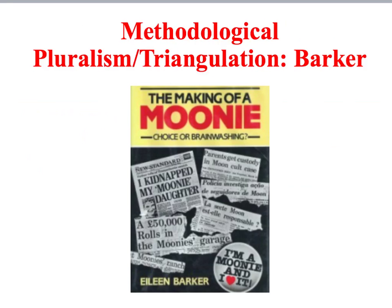Some sociological studies use a variety of methods — technically known as methodological pluralism. Sociologists might use different methods and different types of data to check that results obtained by a particular method are valid and reliable. This approach of using a range of methods — usually at least two or three — to check findings is called triangulation.